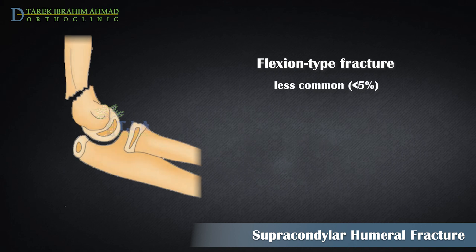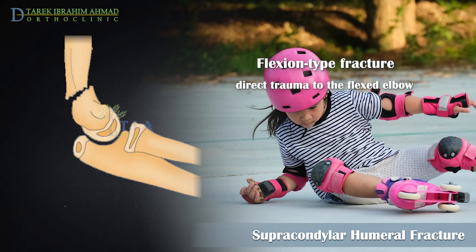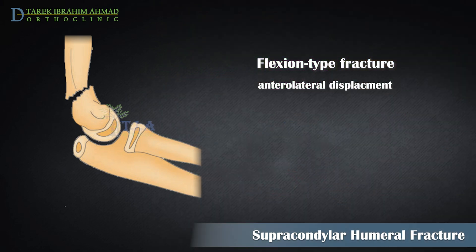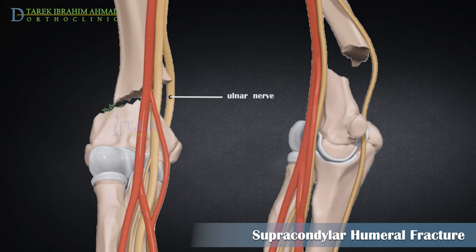Supracondylar flexion fractures account for five percent of supracondylar fractures. These fractures result from a direct blow to the posterior aspect of the flexed elbow, and the distal condylar complex is more likely to displace in the anterolateral direction. The ulnar nerve crosses the elbow posterior to the medial epicondyle and is typically not affected with extension-type fractures.